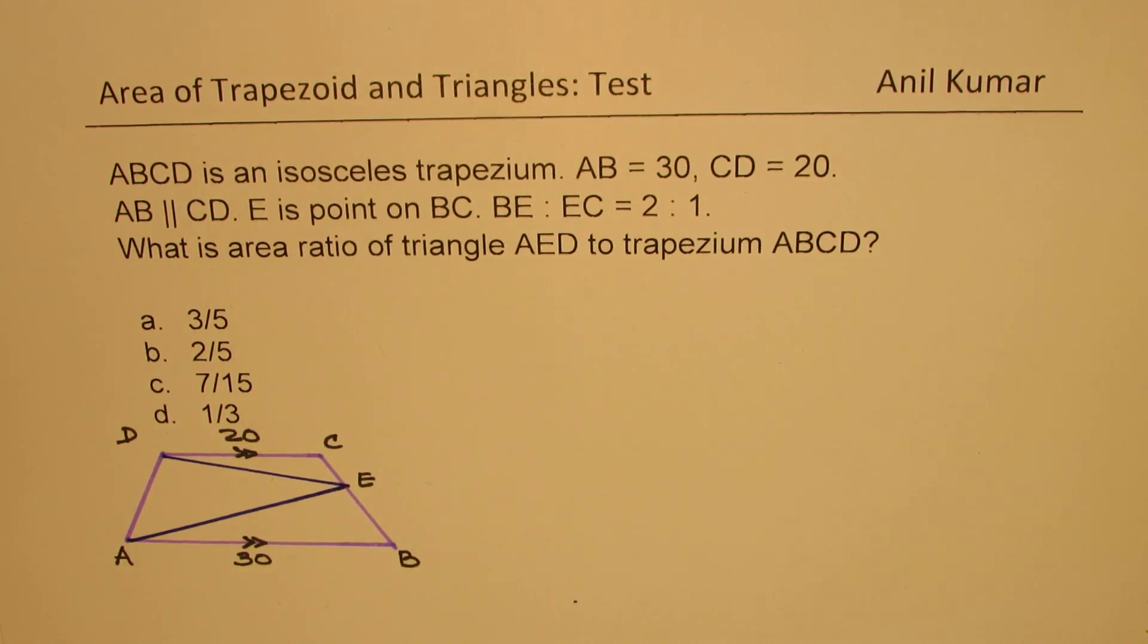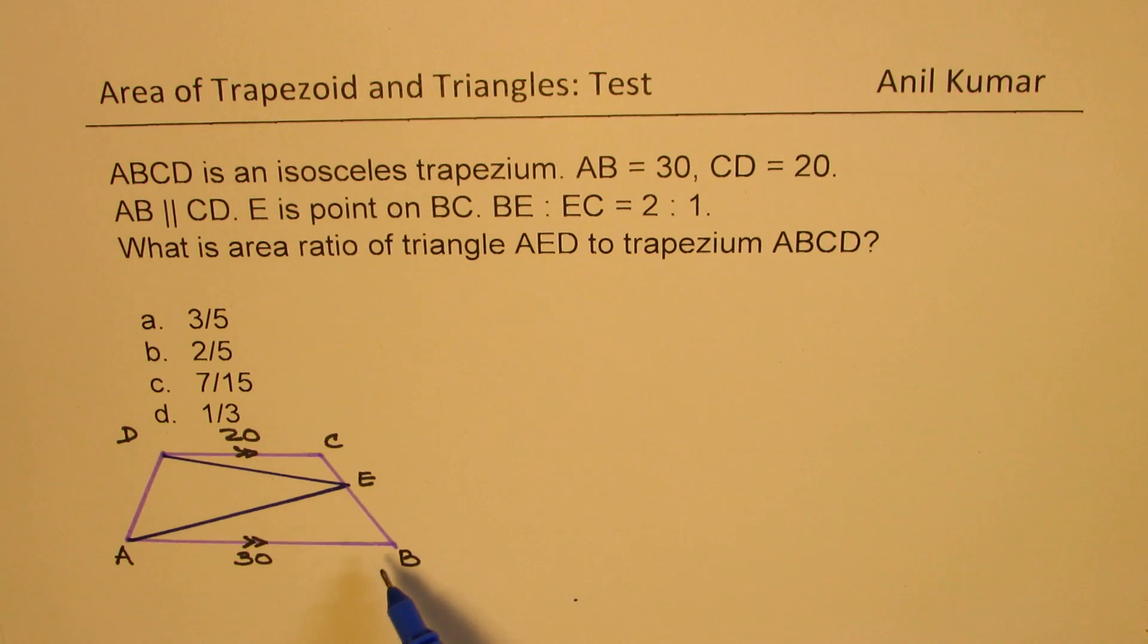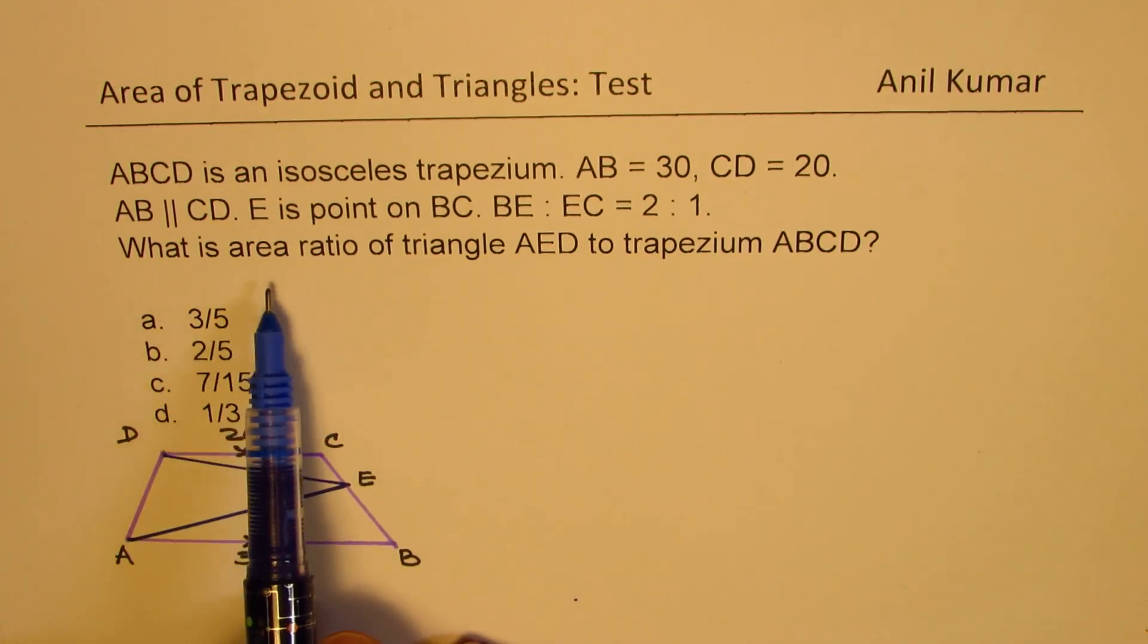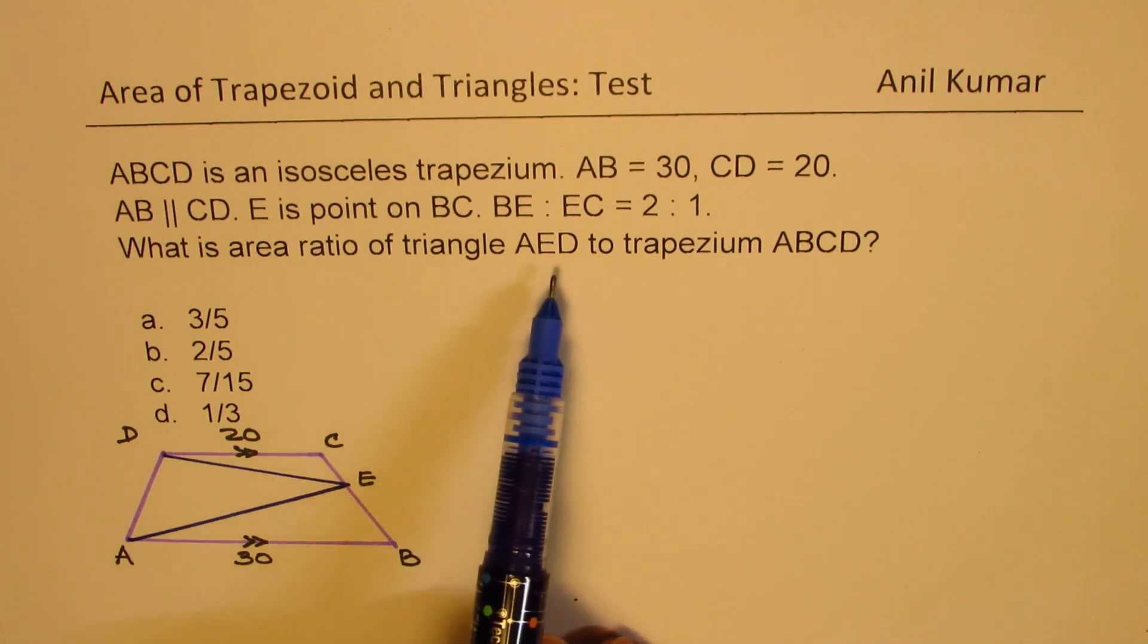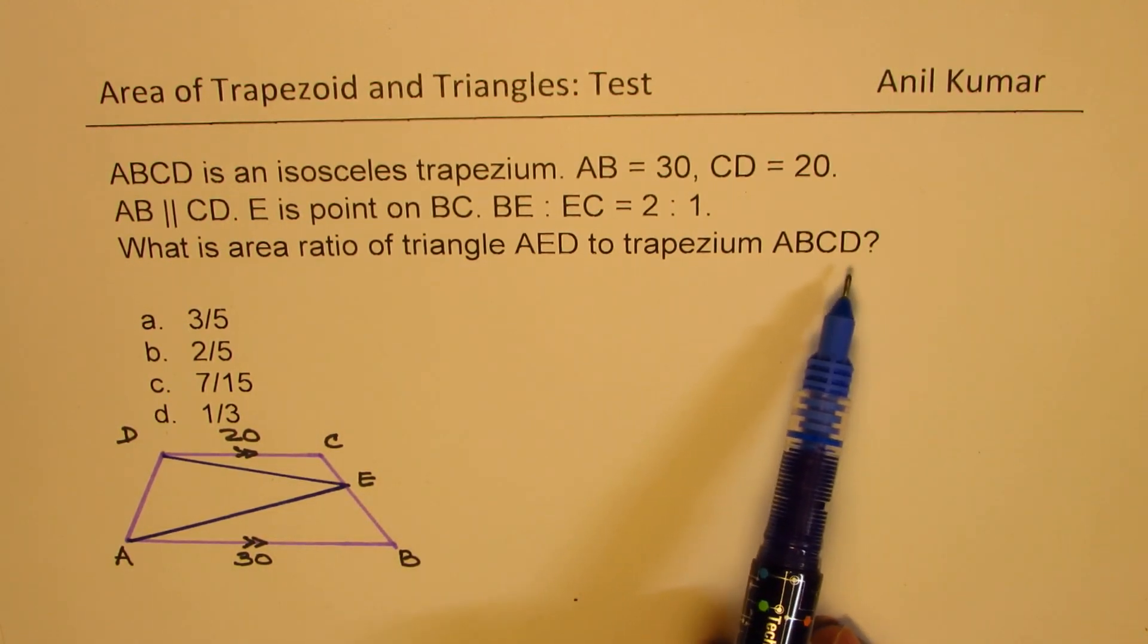The question here is: ABCD is an isosceles trapezium. AB equals 30, CD equals 20. AB is parallel to CD. E is a point on BC, where BE to EC, this ratio, is 2 is to 1. What is area ratio of triangle AED to trapezium ABCD?